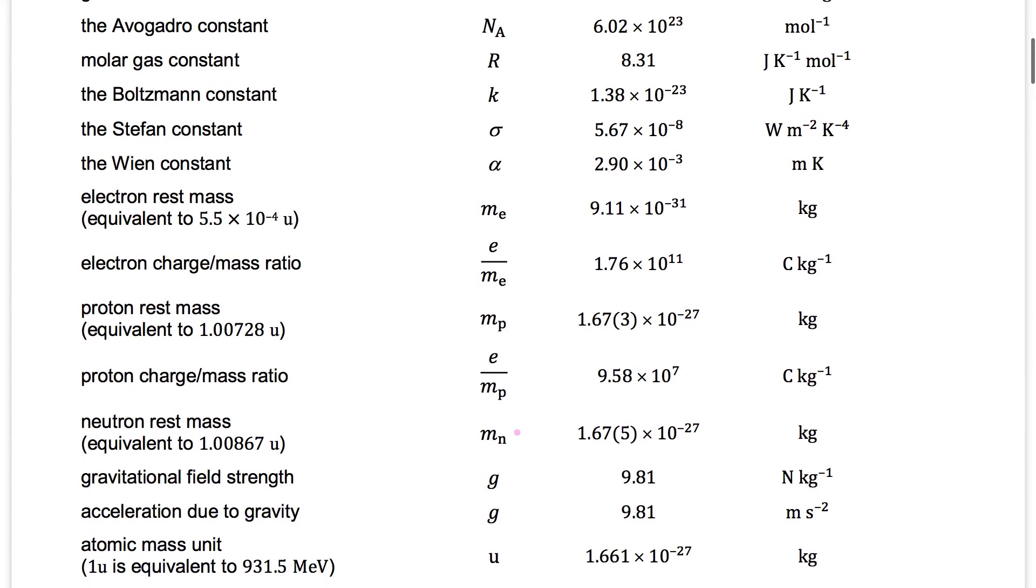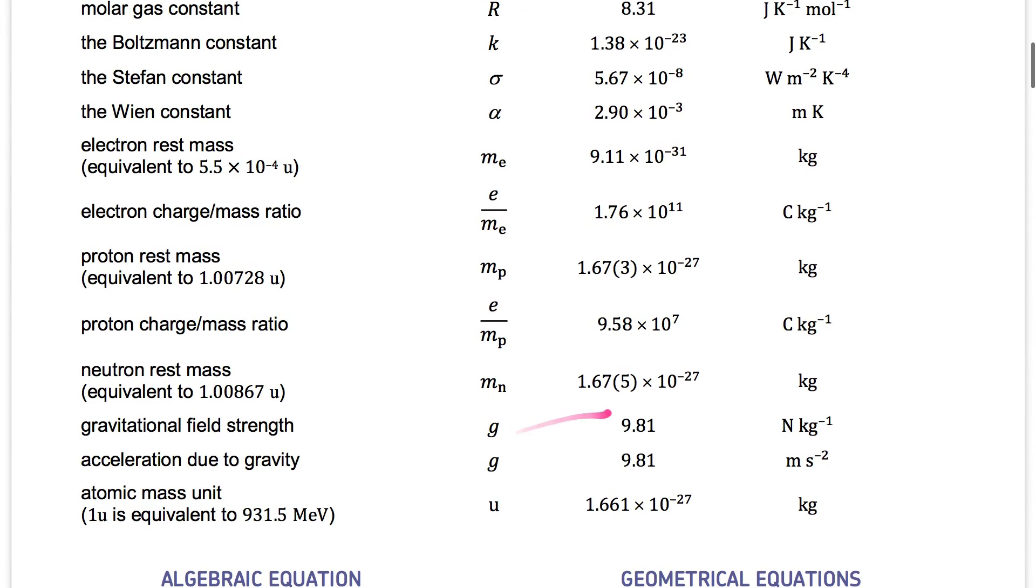Then the neutron rest mass is 1.67 times 10 to the minus 27. It's just about the same as the protons. So neutrons and protons, same.